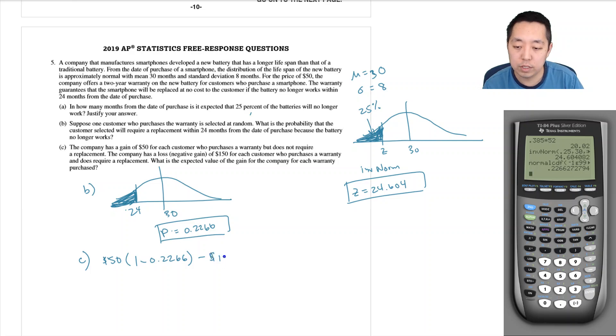And then I lose a hundred fifty dollars every time I do have to replace it, 0.2266. So we would do 50 times (1 minus this answer) minus 150 times the answer.